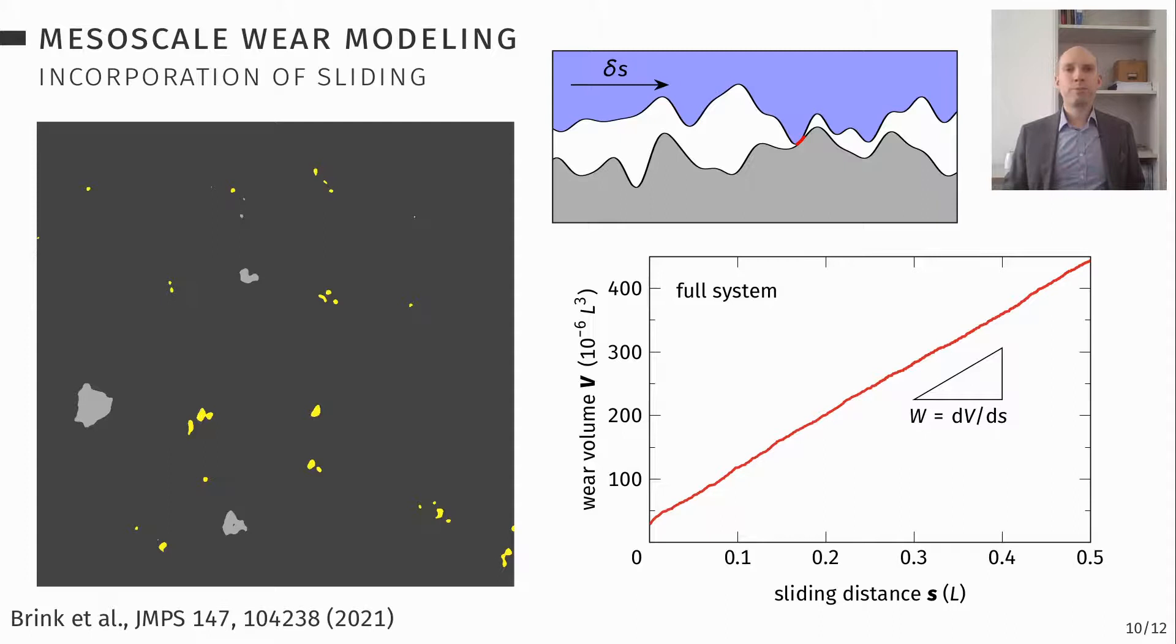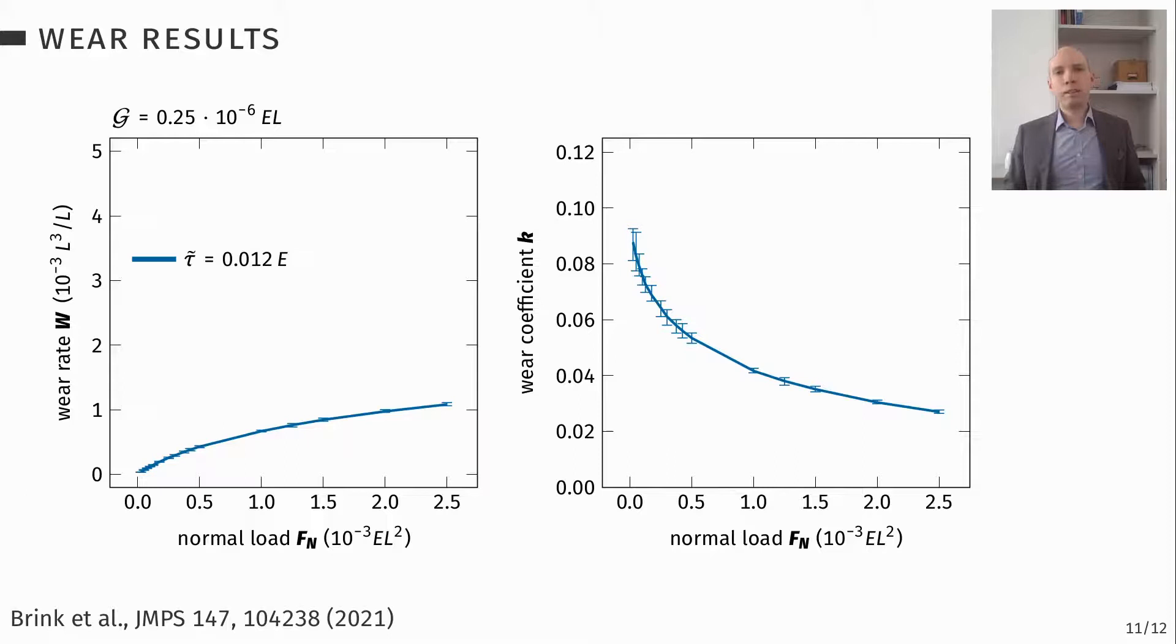You can then do a lot of these simulations and you will see it's still not perfect. The wear rate over normal load is a bit sub-linear, which you can see by the slightly decreasing wear coefficient. But it should be noted that the wear coefficient is much smaller than in the previous approach. And again, 0.1 is not so unreasonable. Some experiments with dry contacts report actually such high wear coefficients. Still, it's quite high, often it's lower, but we're getting closer.